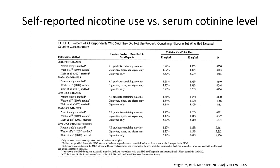Here is another example from NHANES comparing self-reported nicotine use with serum cotinine level. Serum cotinine is a nicotine metabolite, and certain levels indicate if the person has been exposed to the extent that they are likely a current smoker or exposed to secondhand smoke. This table shows the percent of participants who said they did not use nicotine products but had elevated cotinine levels. When asking about all products containing nicotine, it seems that the difference is about one to two percent. This shows another potential benefit of NHANES — you can validate self-reported measures like nicotine use.